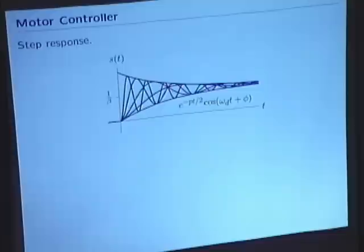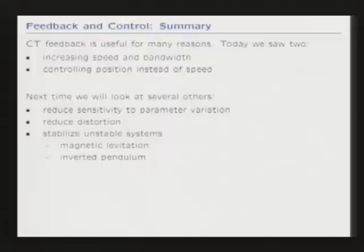Today we illustrated ways of thinking about feedback to enhance performance. We looked at an op-amp and saw how feedback can increase bandwidth and speed. We looked at a motor and found how feedback changes it from voltage-controlled velocity to voltage-controlled position. Next time we'll look at a couple of other examples, including distortion reduction.